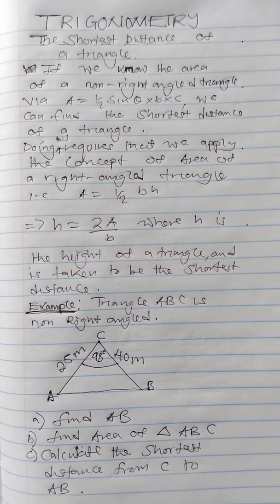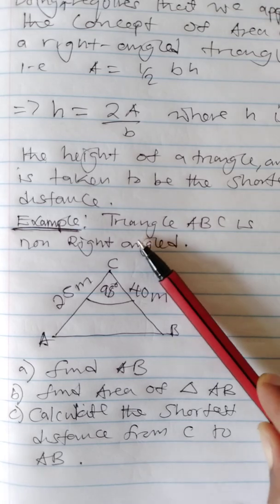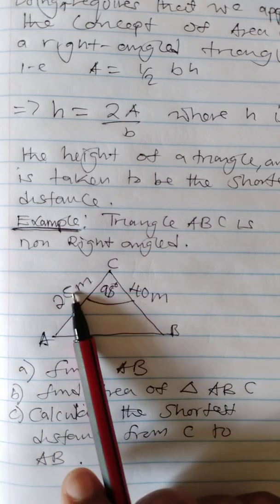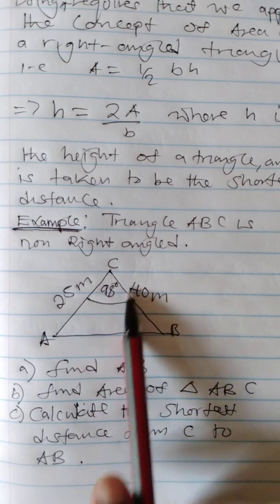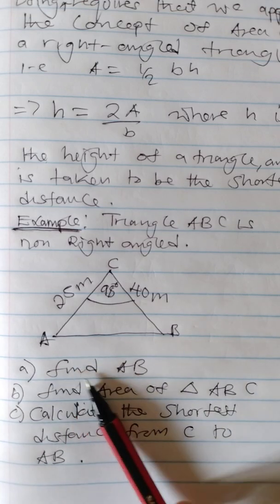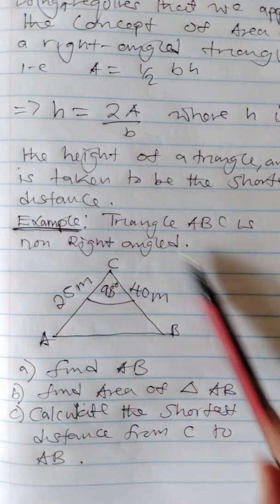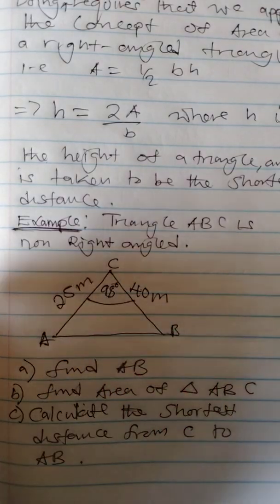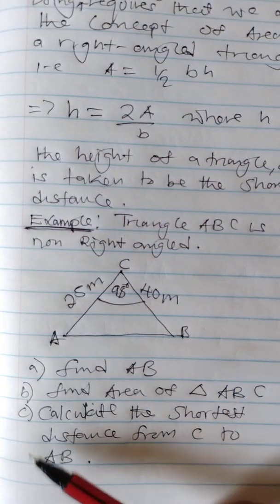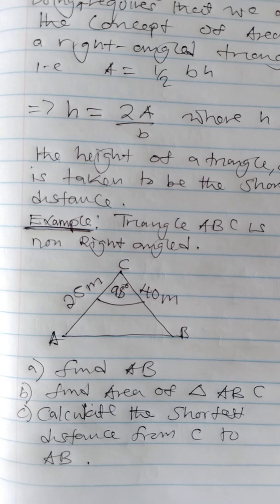Let's try and solve this question. We have three parts. Triangle ABC is non-right-angled. We have one side being 25 meters, another side being 40 meters, and the angle given is 98 degrees. The first question: find AB — meaning the length. The second: find the area of this non-right-angled triangle using our formula. Third: find the shortest distance from C to AB.